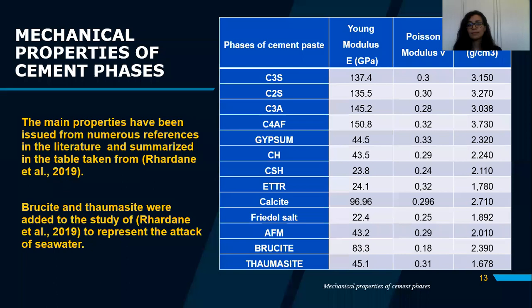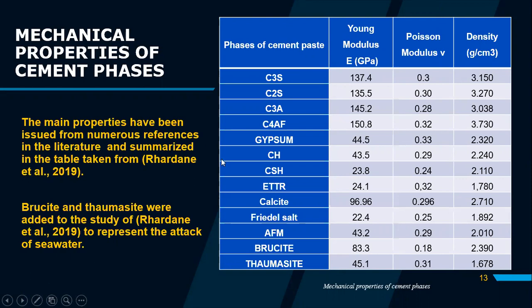As input to this mechanical model, we use the mechanical properties of each cement phase. A table summarizes the main properties of the cement phases, taken from the works of Dardaine in 2019. We have added two phases, brucite and thaumasite, in order to represent the chemical attack.